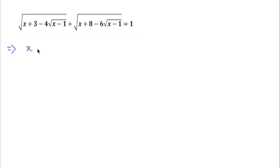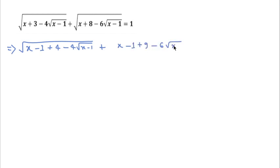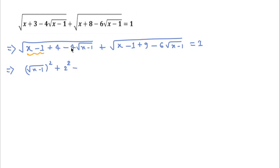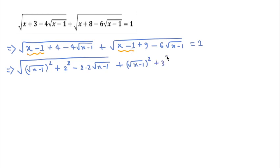I will rewrite this equation: in place of 3, I write minus 1 plus 4, and in place of 8, I write minus 1 plus 9, keeping everything else the same, which equals 1. Now I will write x minus 1 as (√(x−1))², and 4 as 2², and the middle term as 2·2·√(x−1). Similarly, I write 9 as 3² and 6 as 2·3, keeping it equal to 1.